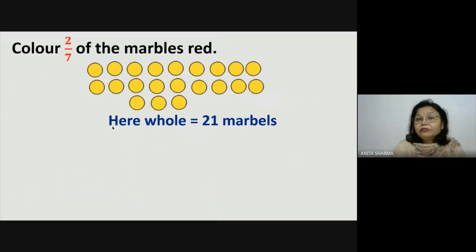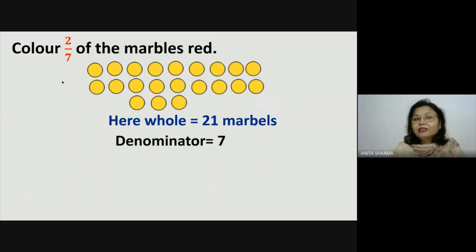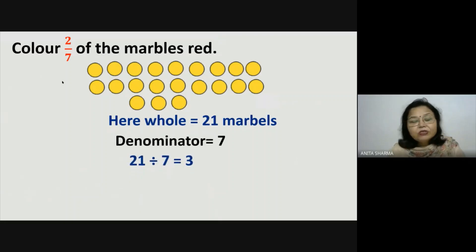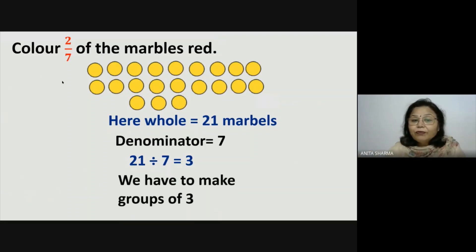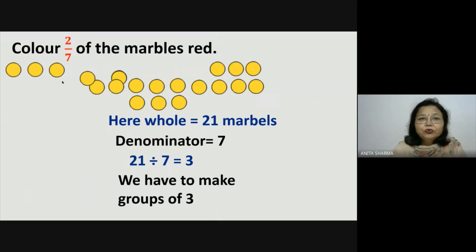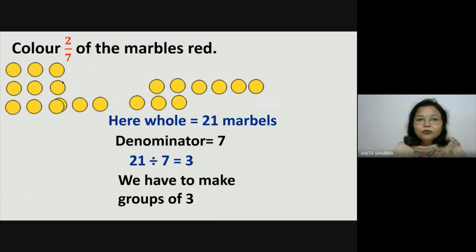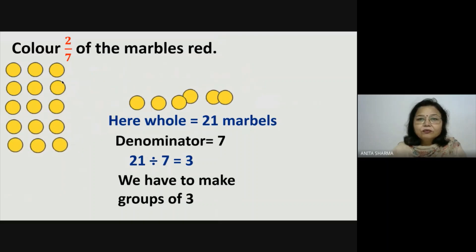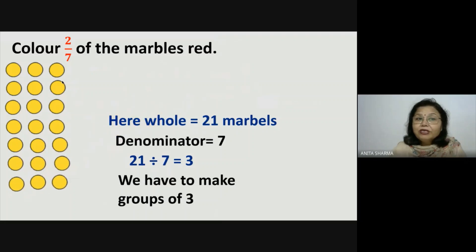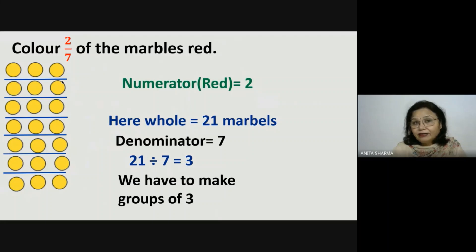Now in 21 marbles, humne 7 parts mein divide karna hai, because here the denominator is 7. So denominator is 7, means we have to divide these 21 marbles into 7 parts. Means 21 divided by 7 is equal to 3, means we have to make groups of 3. So this is 1 group of 3, 2 groups of 3, 3 groups of 3, 4 groups of 3, 5 groups of 3, 6 groups of 3, and 7 groups of 3. We have arranged these 21 marbles in 7 equal parts. Now we have to make 2 groups red. This is 1 seventh, and this is 2 seventh.